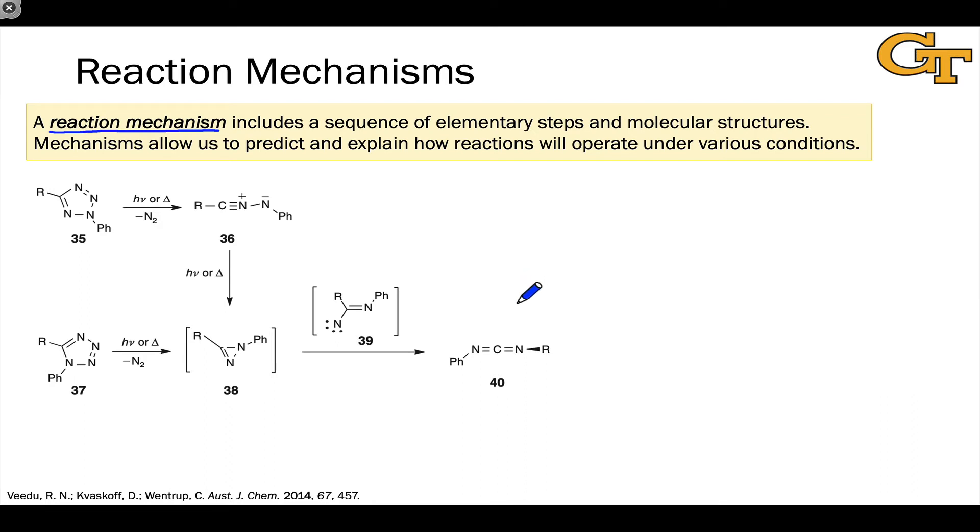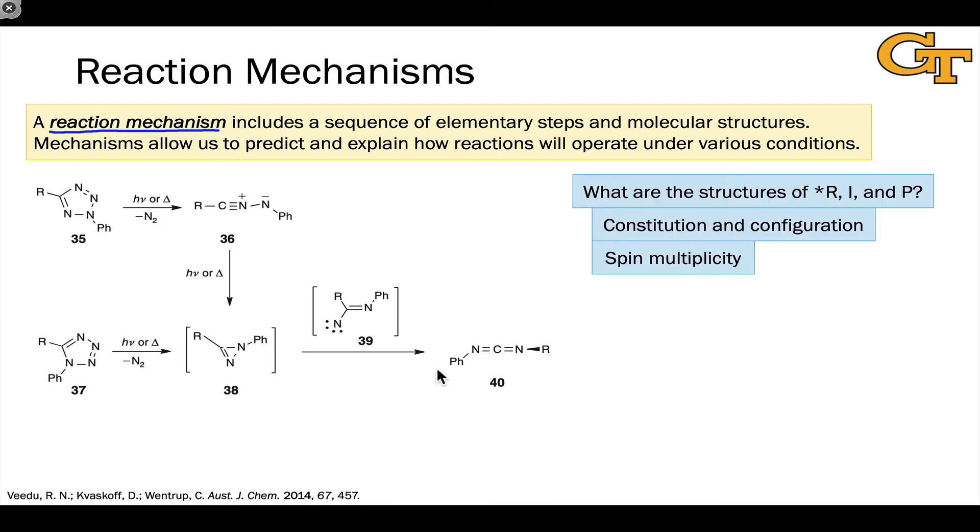It may be, for example, that we think of a step as elementary that is actually not. So in terms of the parts, in a photochemical mechanism, there will always be at least one excited state along the reaction path. We're interested in the nature of that excited state, the structures of any intermediates, as well as the products. When we talk about structure, we're interested in constitution, how things are connected, and configuration, the three-dimensional structure. We're also interested in spin multiplicity of the excited state. Is it a singlet or triplet?